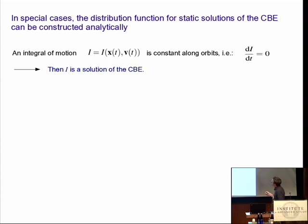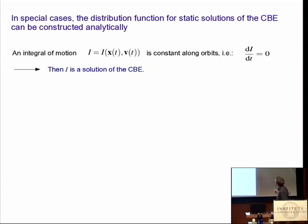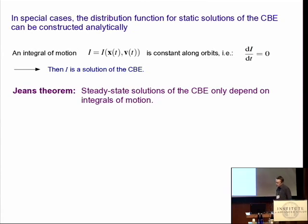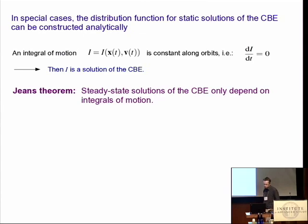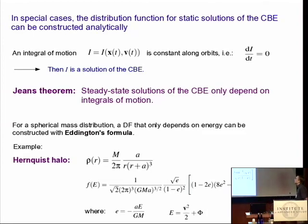There's an important theorem called the Jeans theorem, which starts from the observation that if you have an integral of motion — some function of the phase space variables that is constant along orbits — then this integral of motion is a solution of the collisionless Boltzmann equation. Static solutions of the collisionless Boltzmann equation only depend on the phase space variables through integrals of motion. The simplest dependence is that the distribution function depends only on particle energies, which are constant in a static potential.